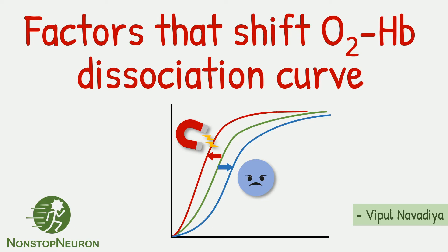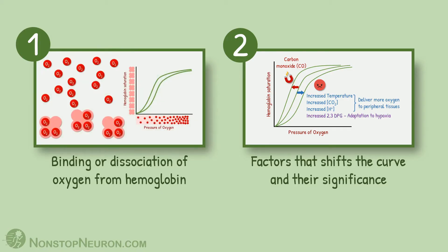Hello, in this video we will learn about factors that shift the oxygen hemoglobin dissociation curve. First we will see what exactly a shift in the curve means in terms of binding or dissociation of oxygen with hemoglobin. Then we will see different factors that shift the curve and their importance. Let's get started.